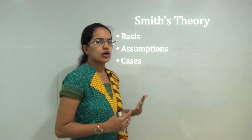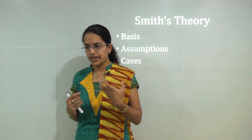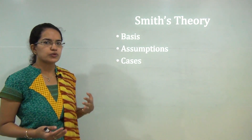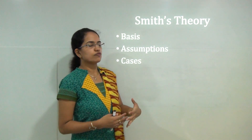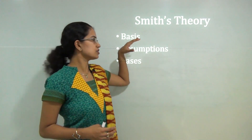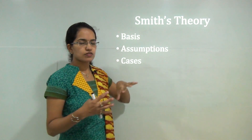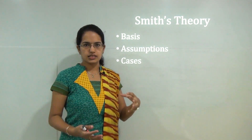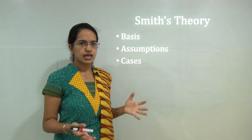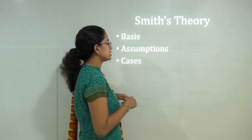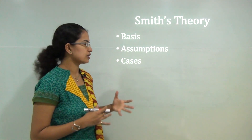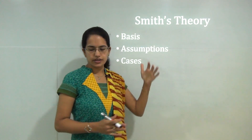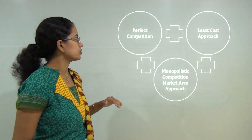Whenever we talk about any theory, if you are writing answers or trying to explain a theory, it's best to break it down under certain heads. First you must mention the basic assumptions of the theory, the basis of the theory, then the assumptions, the various cases or the base idea of the theory, and finally the criticism or drawbacks — the shortcomings that you can mention. Let's apply this same structure to Smith's theory.